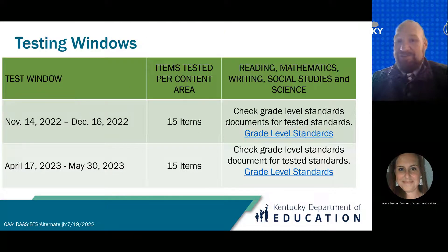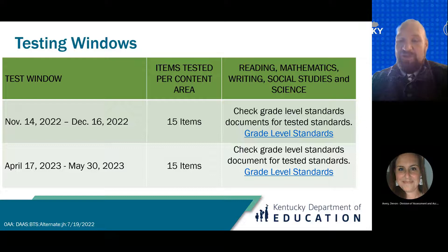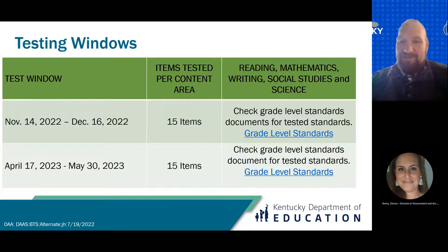Testing Window One will open November 14th and run until December 16th, with 15 items per content area focusing on one specific group of standards. You can find which standards are tested by checking the grade-level standards document on the KDE website linked on the slide, broken down by content and grade level. Testing Window Two will open April 17th and run until May 30th, also with 15 items per content area. Consult the grade-level standards document on the KDE website to find which standards are assessed during this window.